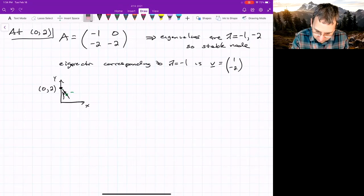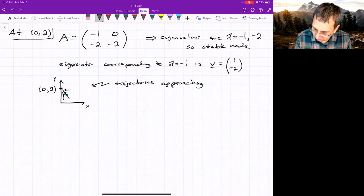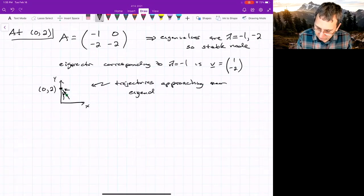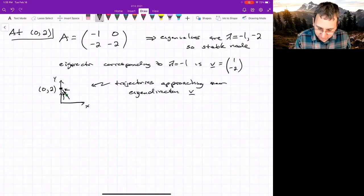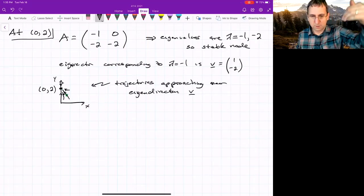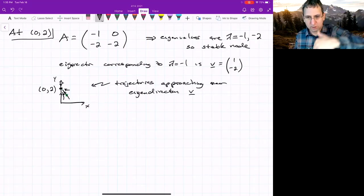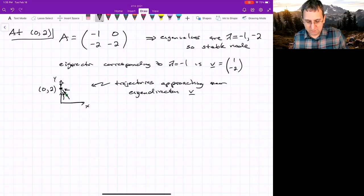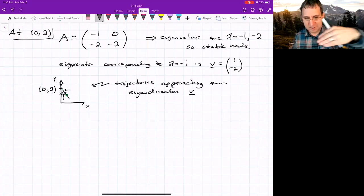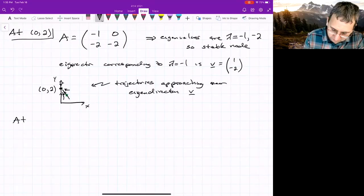There, that's a fixed point. So I should show arrows kind of going in to it. So trajectories approaching near the eigen direction v. And the dynamics are still going to be pointing towards it along the y-axis, right? The y-axis is an invariant set, meaning if you start on it, you stay on it. And for this to be a stable node, that means that's the other eigen direction. Okay. We'll look at the other point.